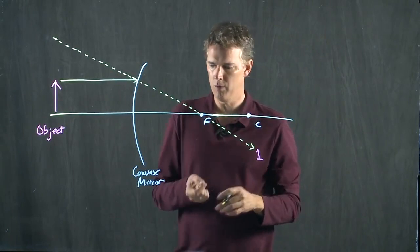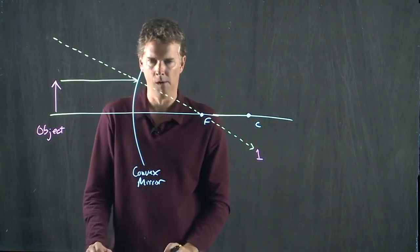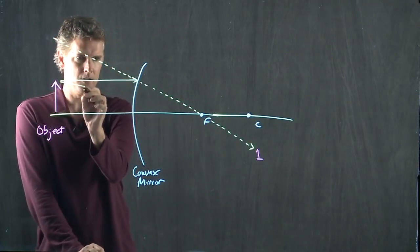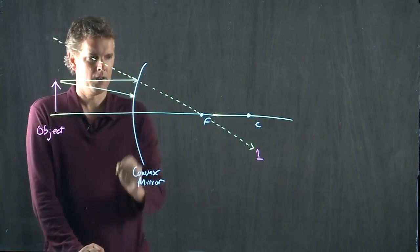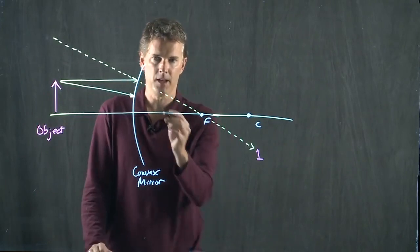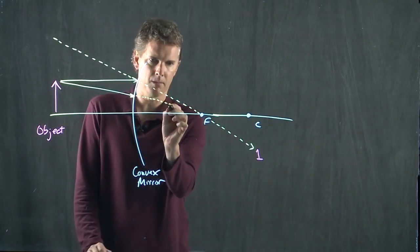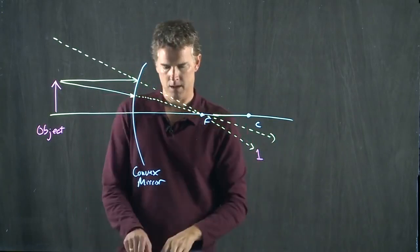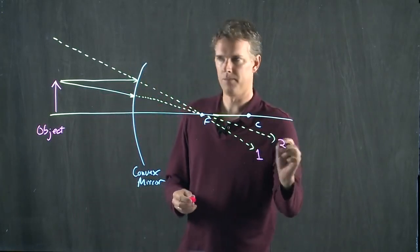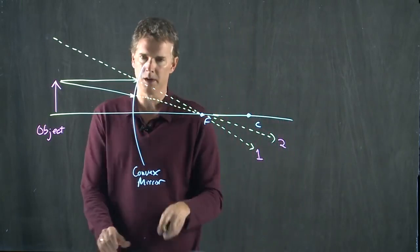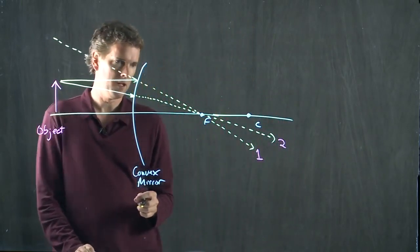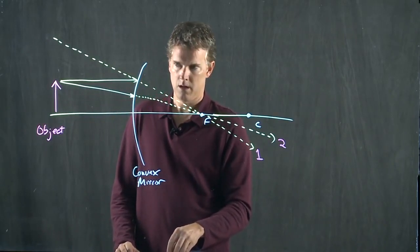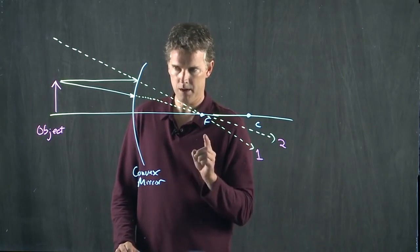Rule number two was rays through the focus go parallel. There's the focus. How do I get to it? I go like this. I get to the mirror and it stops becoming a real ray. It in fact becomes a virtual ray, and this is ray two.